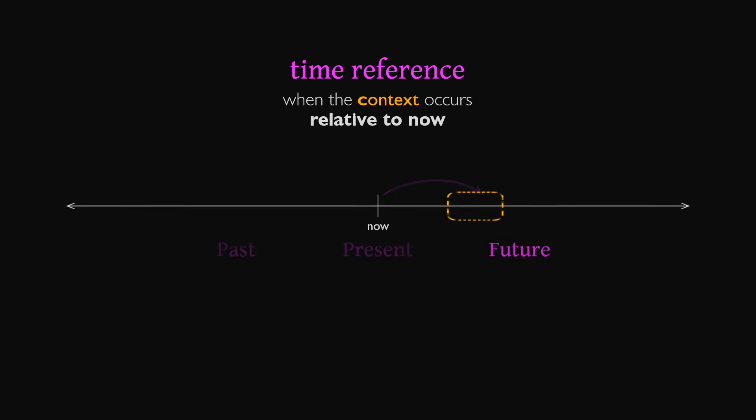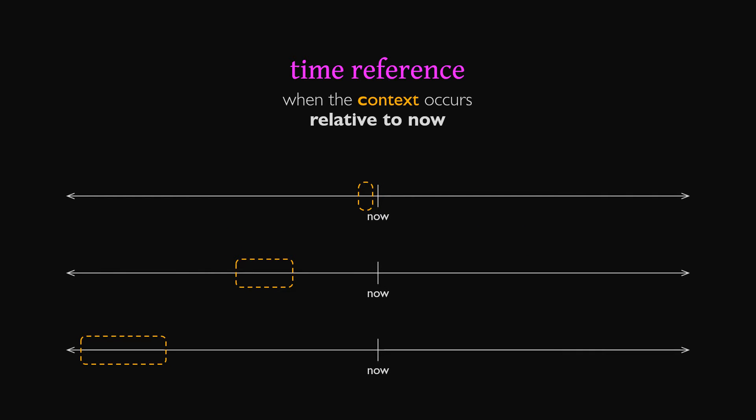The specific time or duration in which the context is set doesn't matter when setting the time reference. Whether the context is yesterday at noon, or when I was young, or the 18th century, the time reference is simply past. The same is true of future tenses.